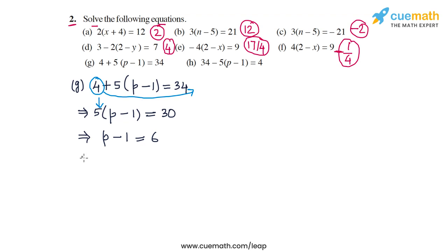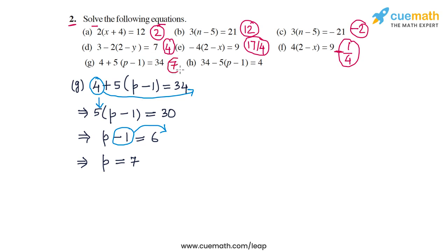In the last step, transpose minus 1 to the right side, making it plus 1, leaving p = 6 plus 1, or 7. The solution for part g is p is equal to 7.